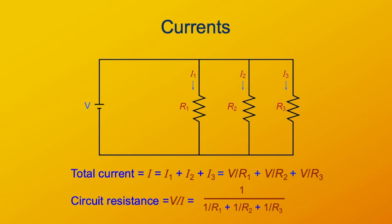By Ohm's Law, I = V/R, and since the voltage is the same for all three, we have: total I = V/R1 + V/R2 + V/R3. The total resistance is V divided by that total current. Factoring V from numerator and denominator gives the result: the total circuit resistance equals the reciprocal of the sum of the reciprocals of the individual resistances. I suggest you verify that for yourself.